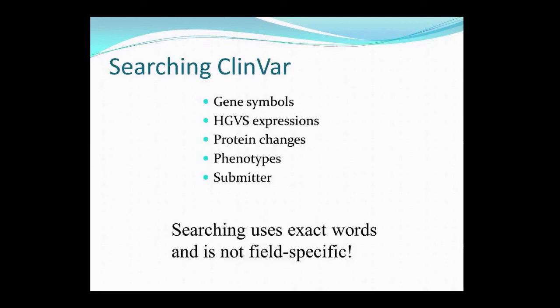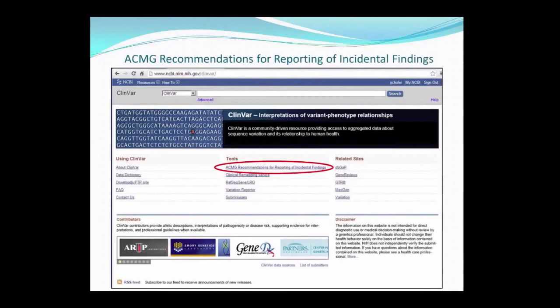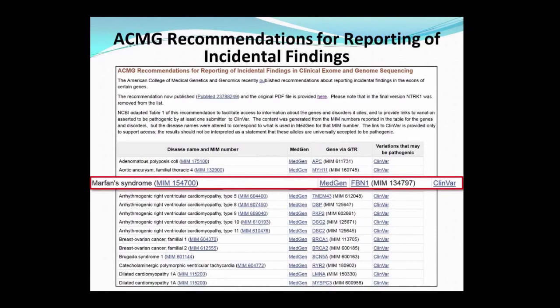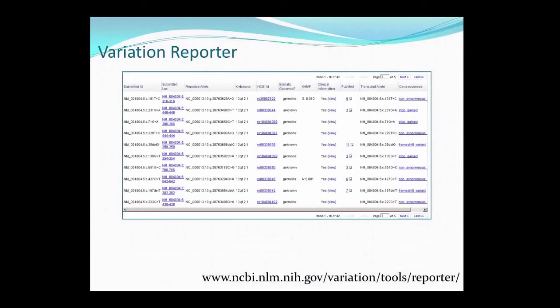Note that the search uses exact words and is not field-specific, so sometimes this can make for broader search results than you expect. You can use the filters or the Advanced Search to narrow your results. As whole exome and whole genome sequencing is becoming more common, reporting incidental findings is a hot topic, especially following ACMG's recommendations for reporting incidental findings. Right on the ClinVar homepage is a link that goes to a table listing all of the genes in ACMG's recommendation, with links to find out more information on the genes and their associated conditions, as well as links to reported variants in those genes in ClinVar. Another tool at NCBI that can assist you in evaluating long lists of variants is the Variation Reporter, which allows for looking at such information in bulk.